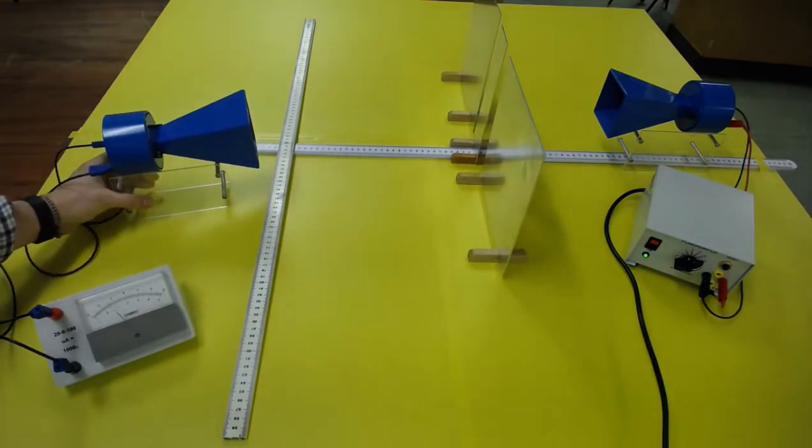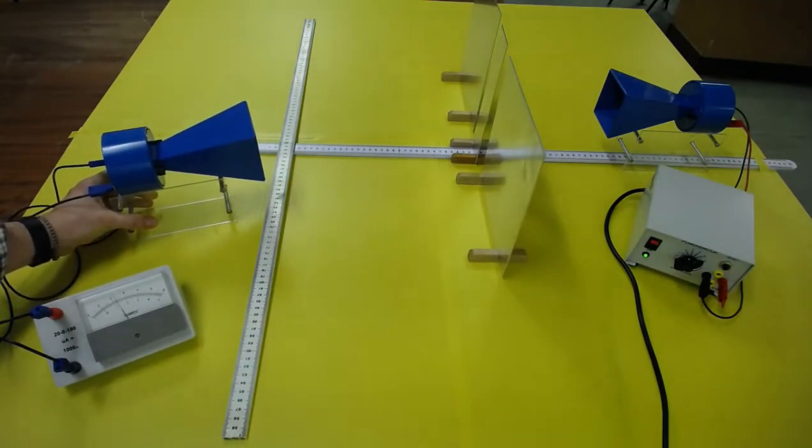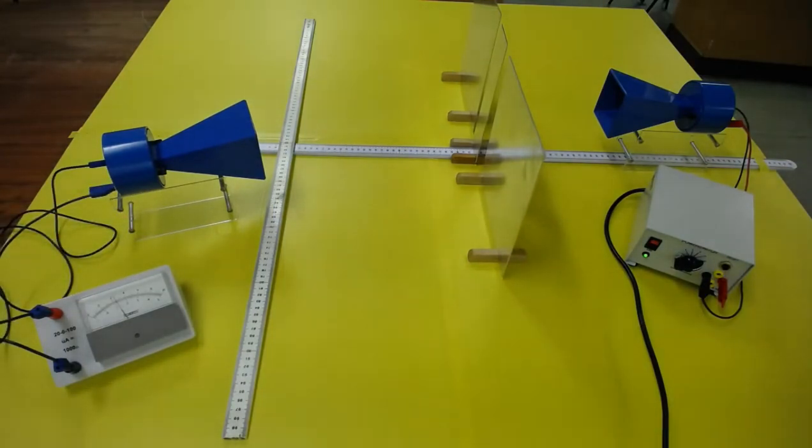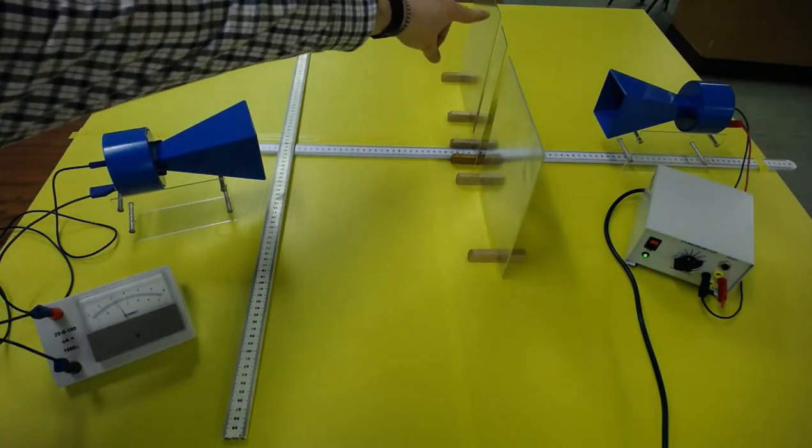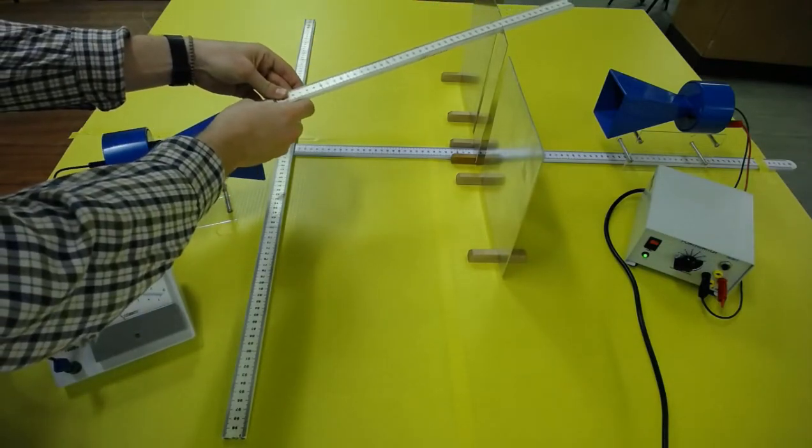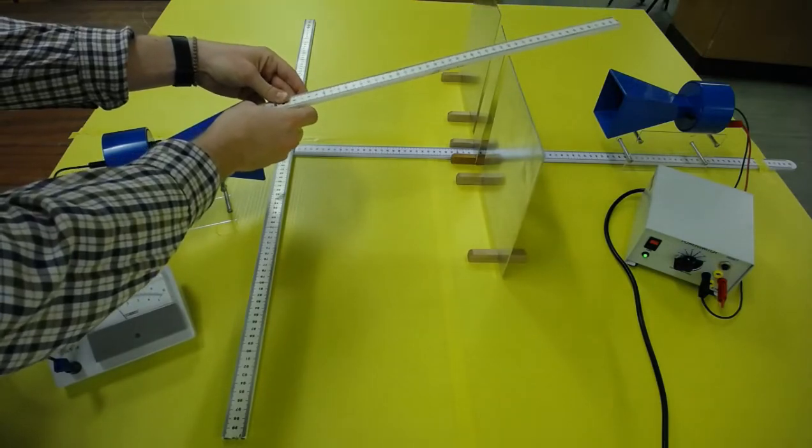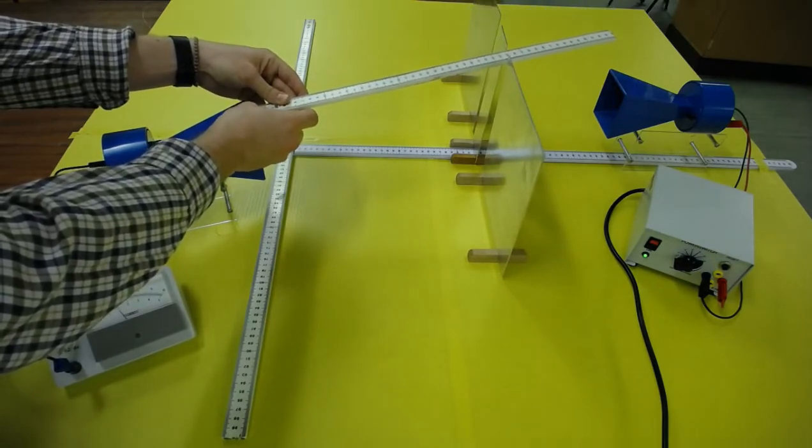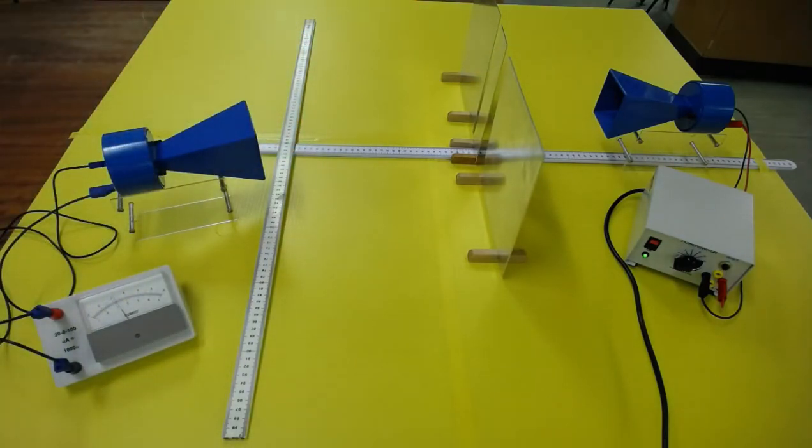Finding that area of constructive interference, and then measuring from the tip of the receiver to each slit. So the furthest away one, that's around 39 centimeters, to the nearest one, that's about 36 centimeters. So the path difference will be about 3 centimeters.